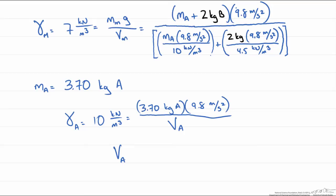And now when we solve for the volume of A we should get 3.63 times 10 to the negative third meters cubed. So that is our final answer.